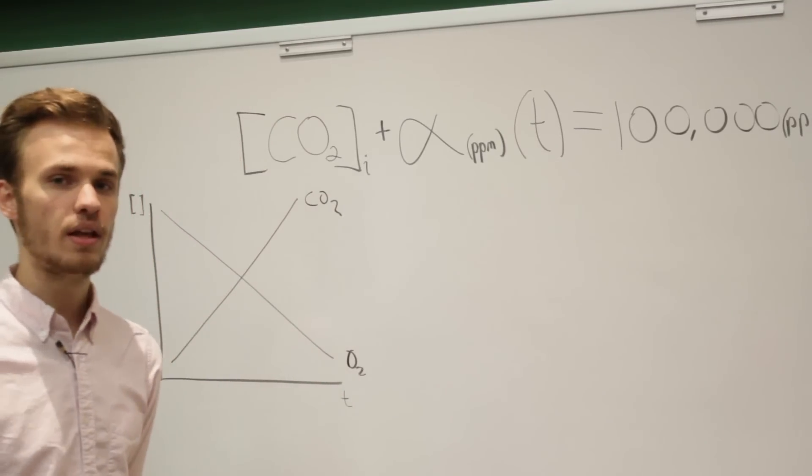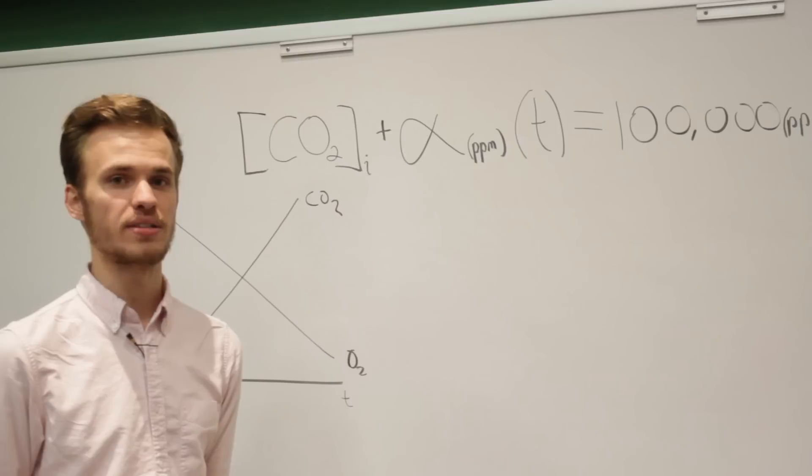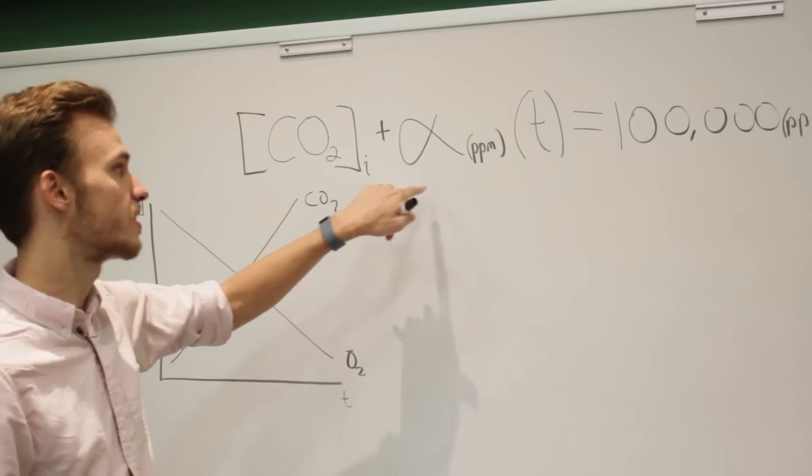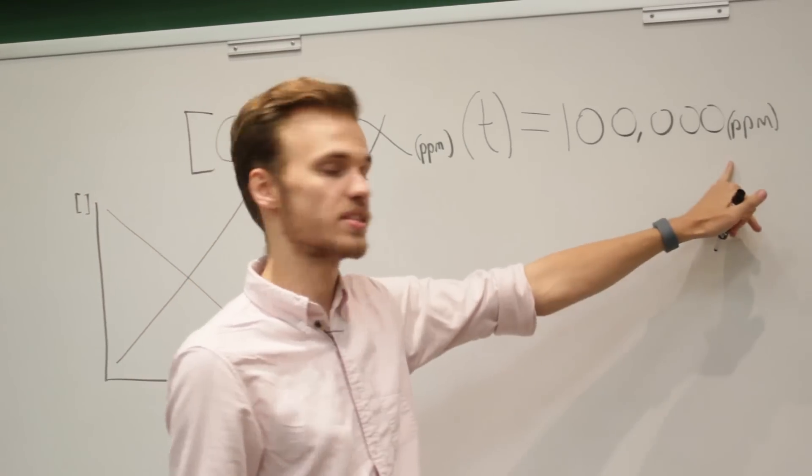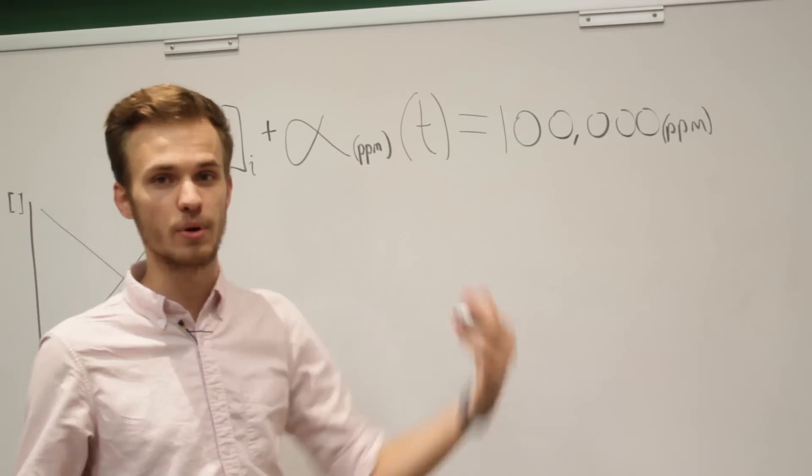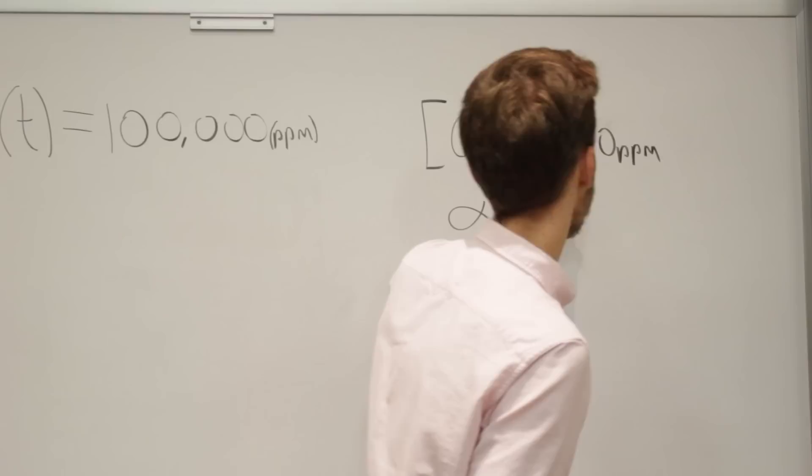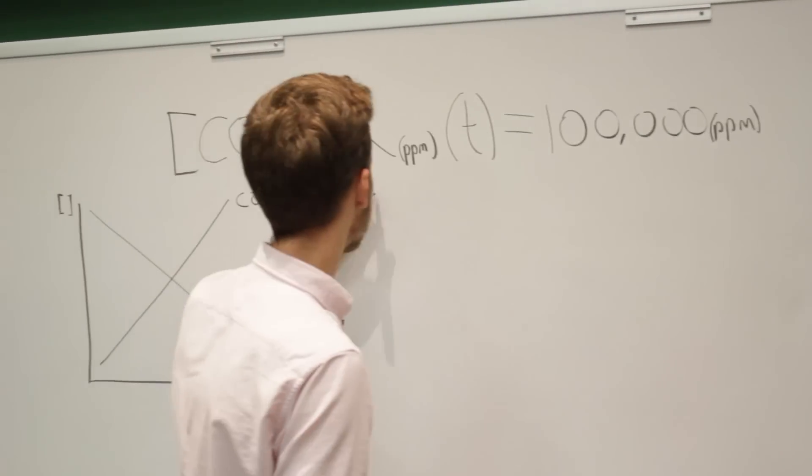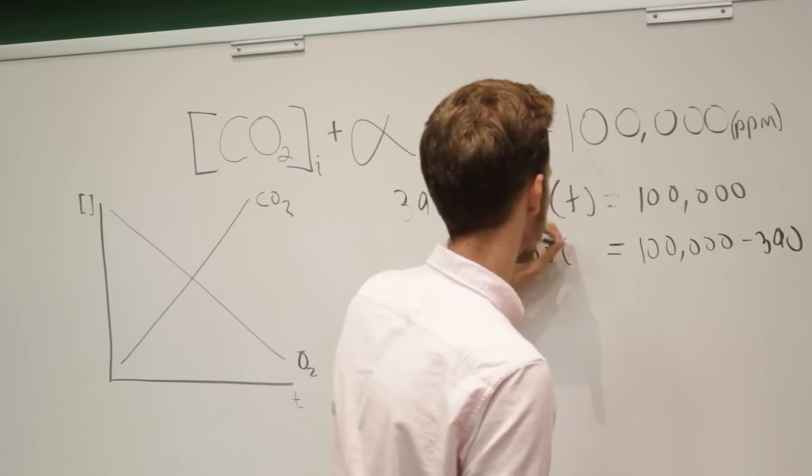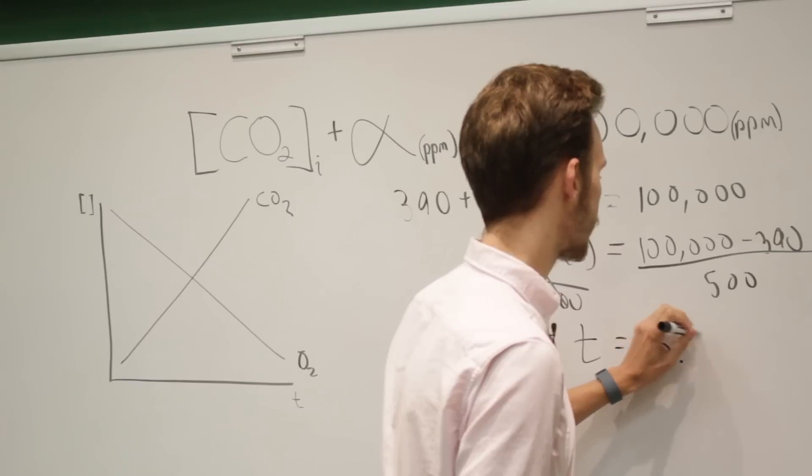The CDC defines the lethal level of CO2 as 100,000 parts per million. Now, the question is, how long would it take to get to 100,000 parts per million? Which we can figure out with this equation. Basically, we have our concentration, our initial concentration of CO2, plus the amount of CO2 that we're adding to the air every minute, which is equal to 100,000 parts per million. And we're solving for T here, which is time. The amount that we're adding to the car every minute is 500 parts per million. Now, we can work with this. And we get 3.32 hours.